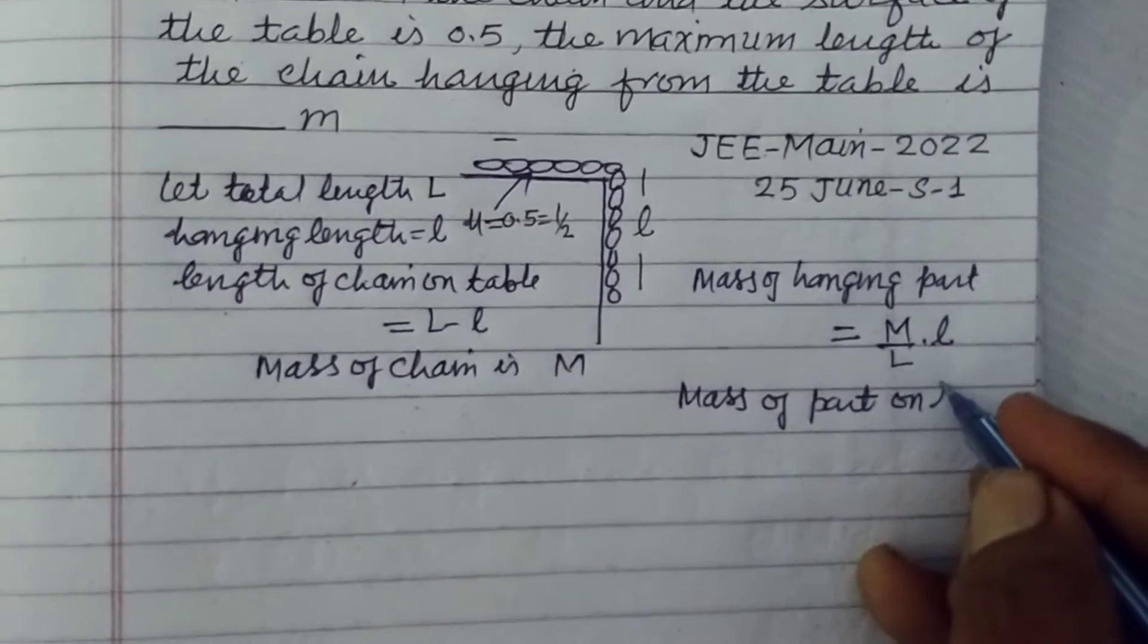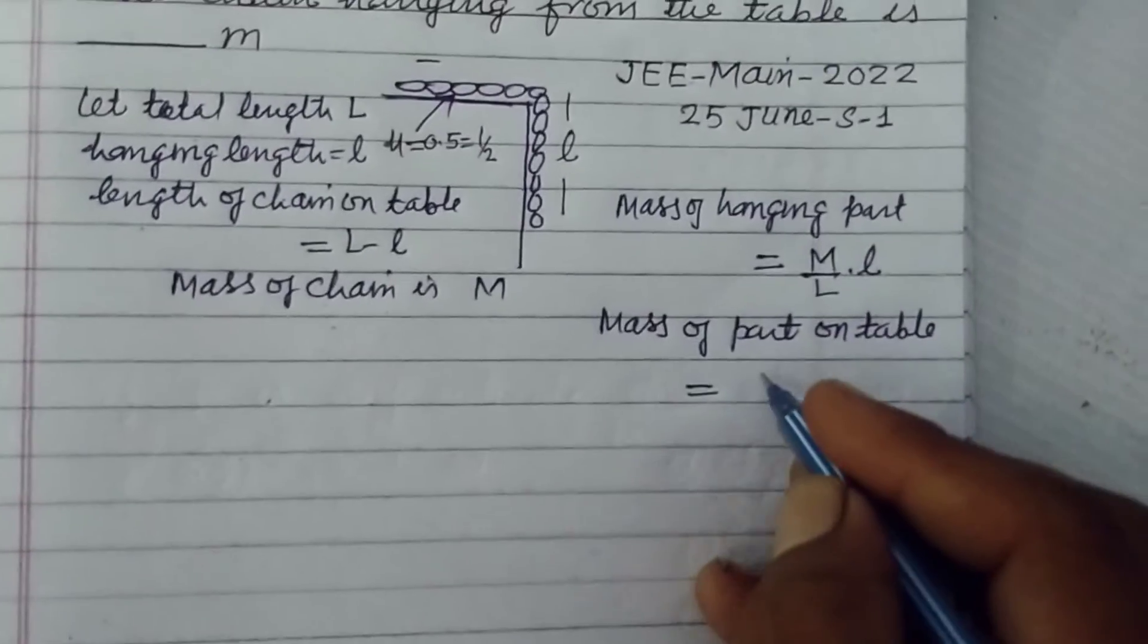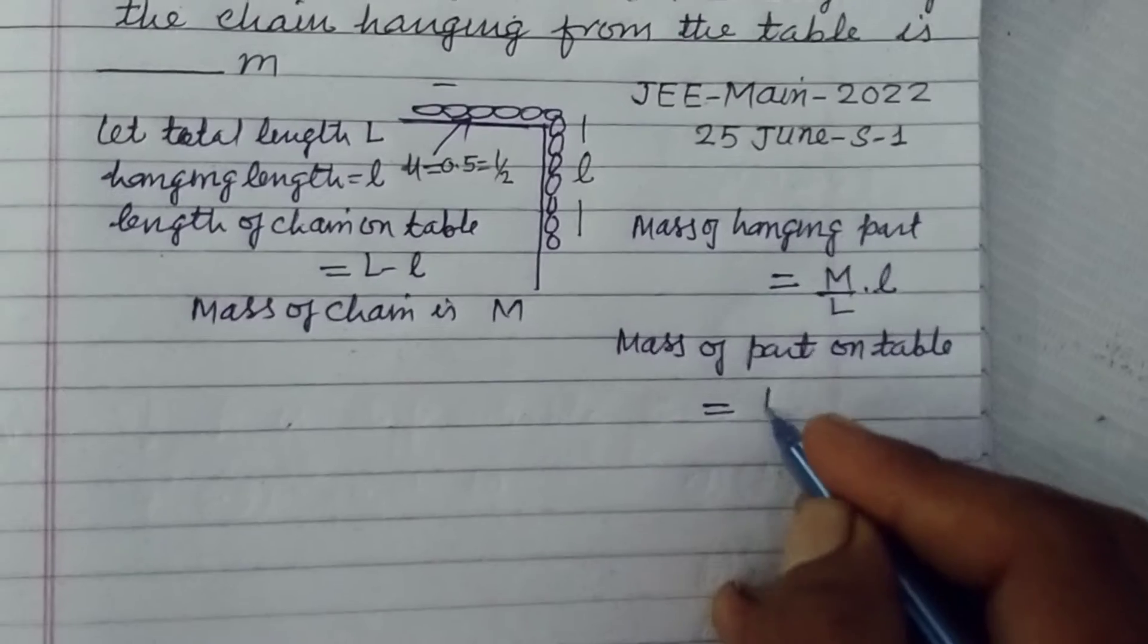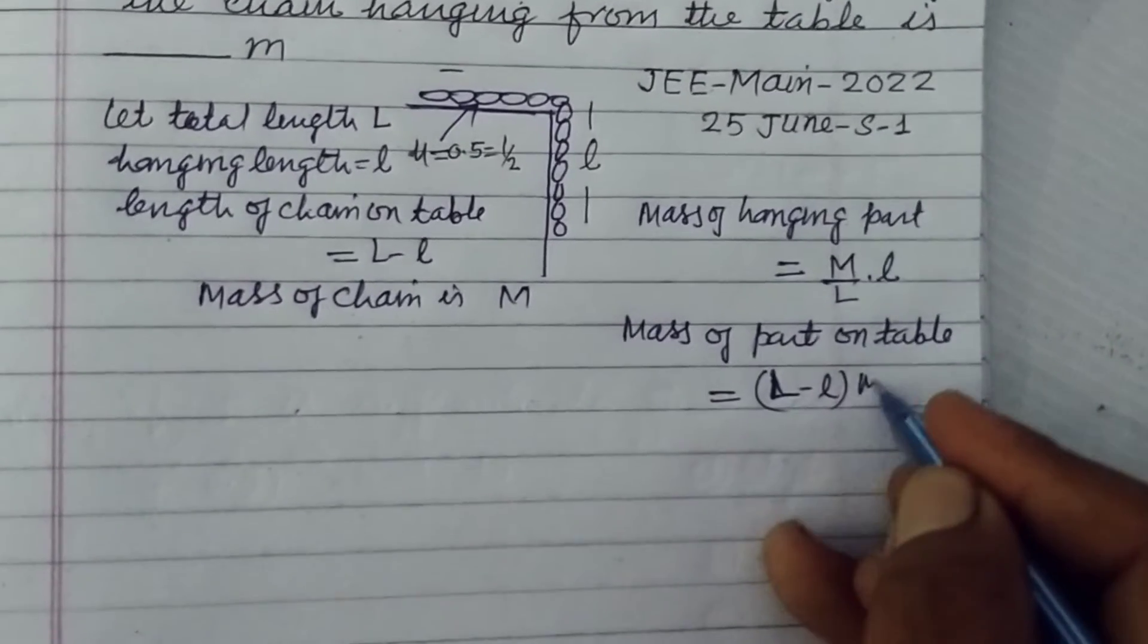Here we want to find out the mass of part on table. So this is L minus l into M upon L.